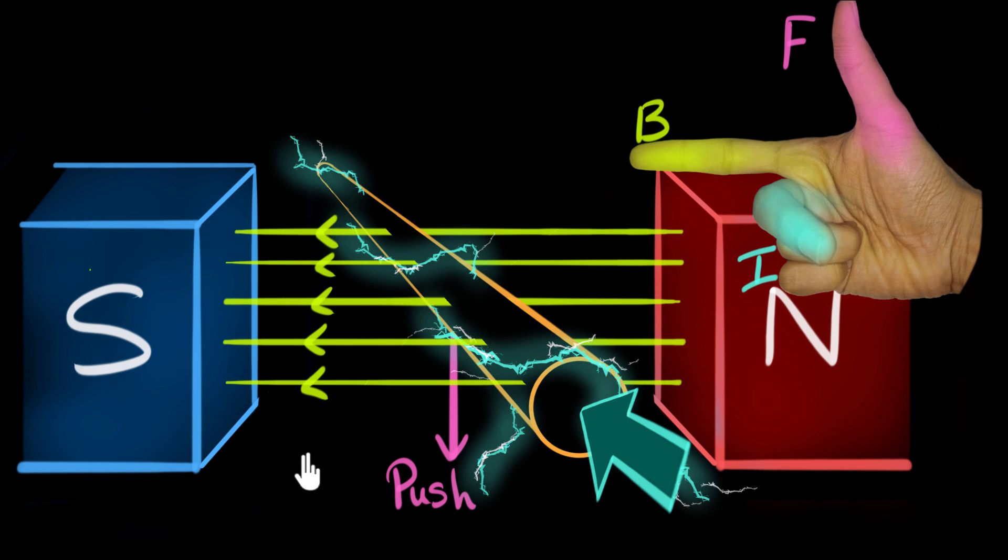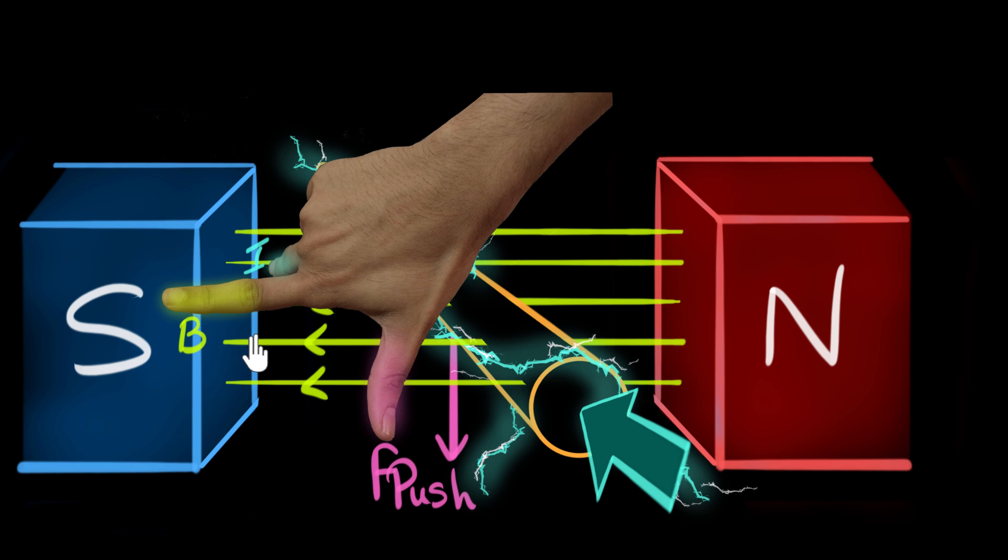If you have done it, it might look somewhat like this. The force is down, magnetic field is to the left. Now notice the current, that is your middle finger, is pointing inwards into the screen, just like what we got here.